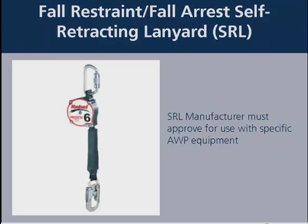Option four is a self-retracting lifeline, commonly referred to as an SRL. You must make sure the SRL manufacturer approves its use with specific aerial work platform equipment. Many SRLs require the anchorage point to be above your shoulders, but the anchorage point on an aerial work platform is not above your shoulders. Therefore, it is important to confirm the SRL manufacturer specifically approves the product and provides guidance for use with an aerial work platform. SRLs are fast becoming a favorite choice due to automatic adjustment and providing the lowest potential fall distance as both a restraint and arrest system.